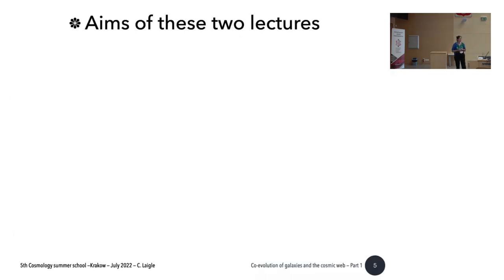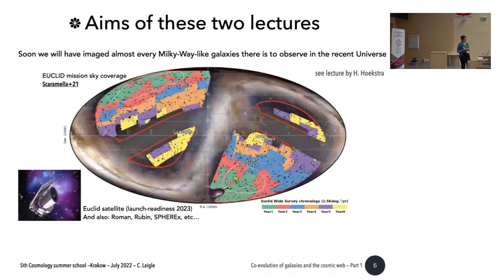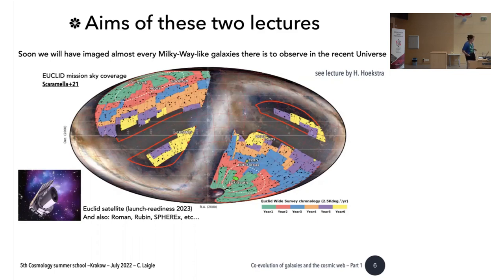Now I will give a brief overview of why I think this topic is important. You heard about Euclid — this very wide-field mission which will image a very large fraction of the celestial sphere. It will be launched within the next year, very soon. With Euclid, we will observe almost every Milky Way-like galaxy observable in the recent universe. This is not overstated.